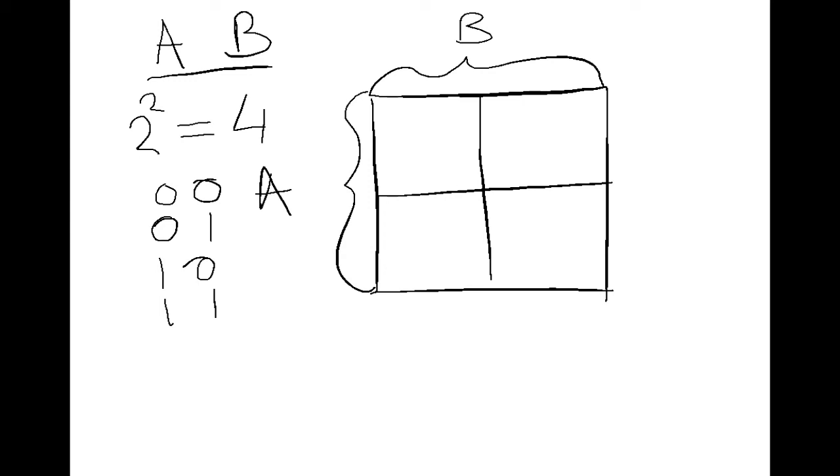Now, A can either be false or true, and B can either be false or true. Now, that means that this first box, if it is in line with the false for B and the false for A, it means that it is false and false. This next box would be false for A and true for B. The bottom one would be true for A and false for B, and for the bottom right, we would go true for both. So that's just for myself to remember what combination fits in each box.